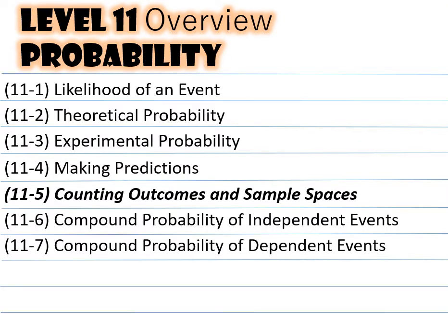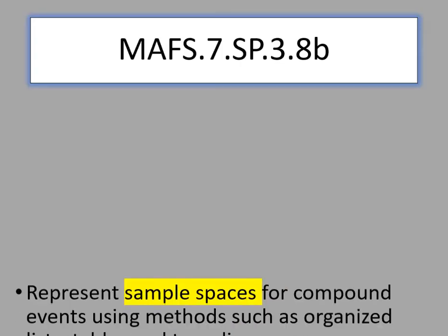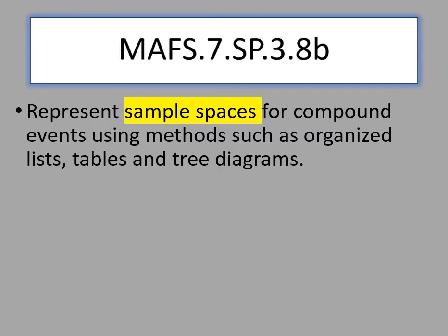Taking a look at the level 11 overview for probability, we see that we are on stage number 5, counting outcomes and sample spaces. Our state standard says that we're going to represent sample spaces for compound events using methods such as organized lists, tables, and tree diagrams.